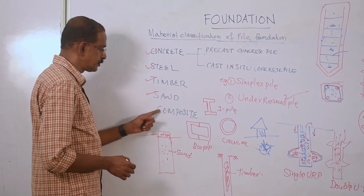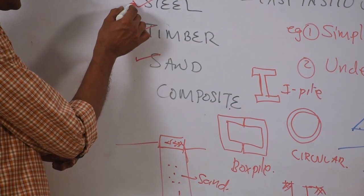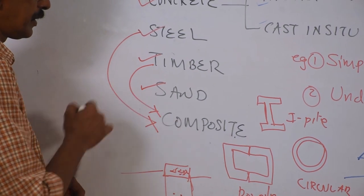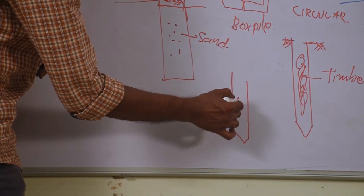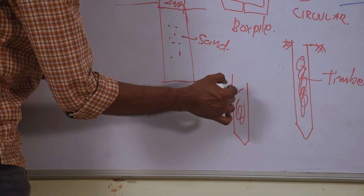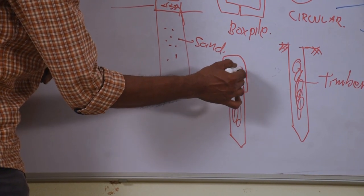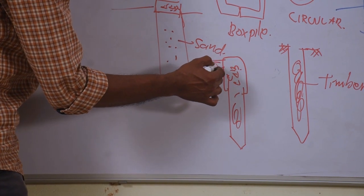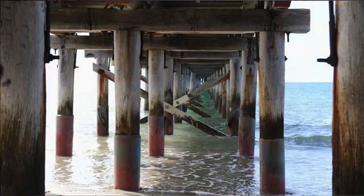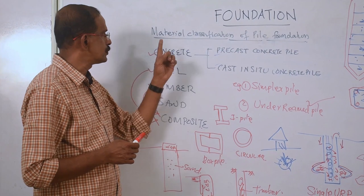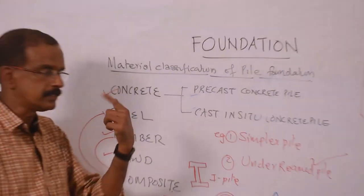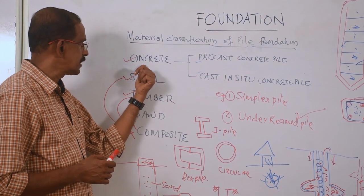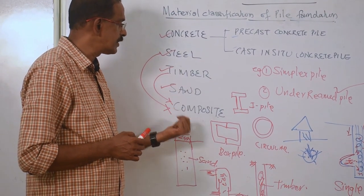Composite pile is a combination of two materials — it can be steel and concrete, or timber and concrete. For example, under water you can use timber, and above water you can use concrete, so the projection can serve as a platform for a jetty. These are the different types of piles based on the material acting as the pile.